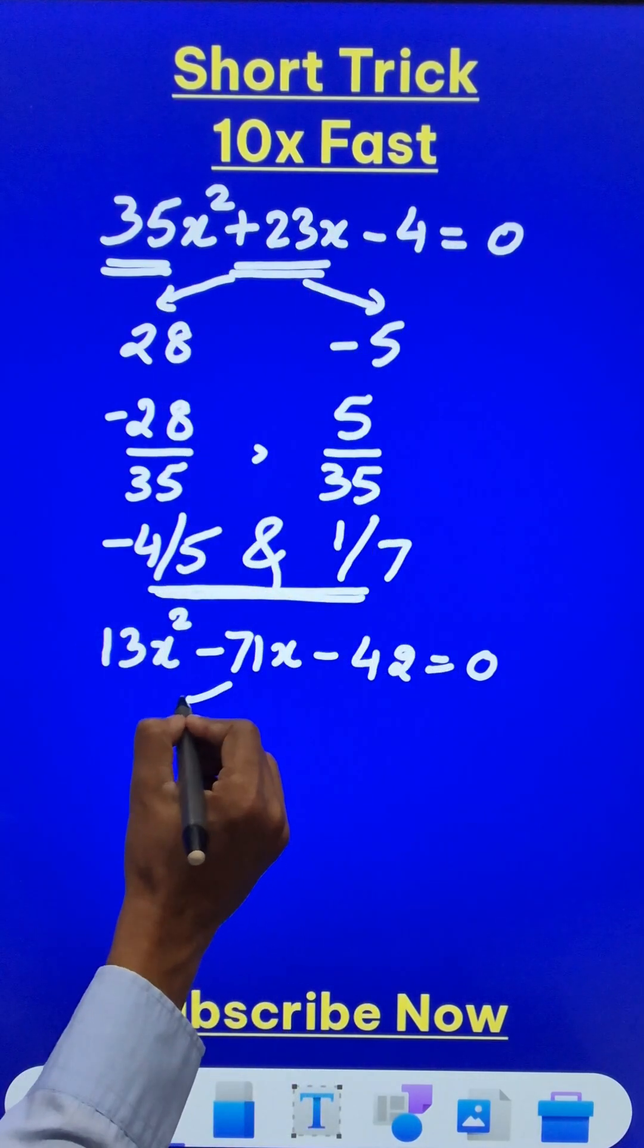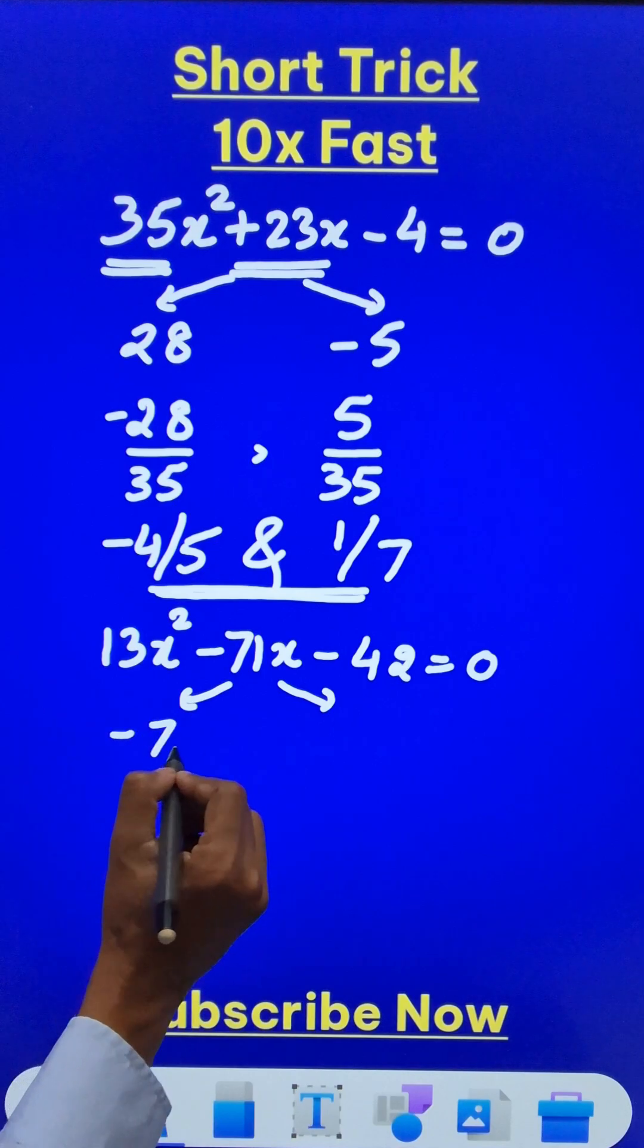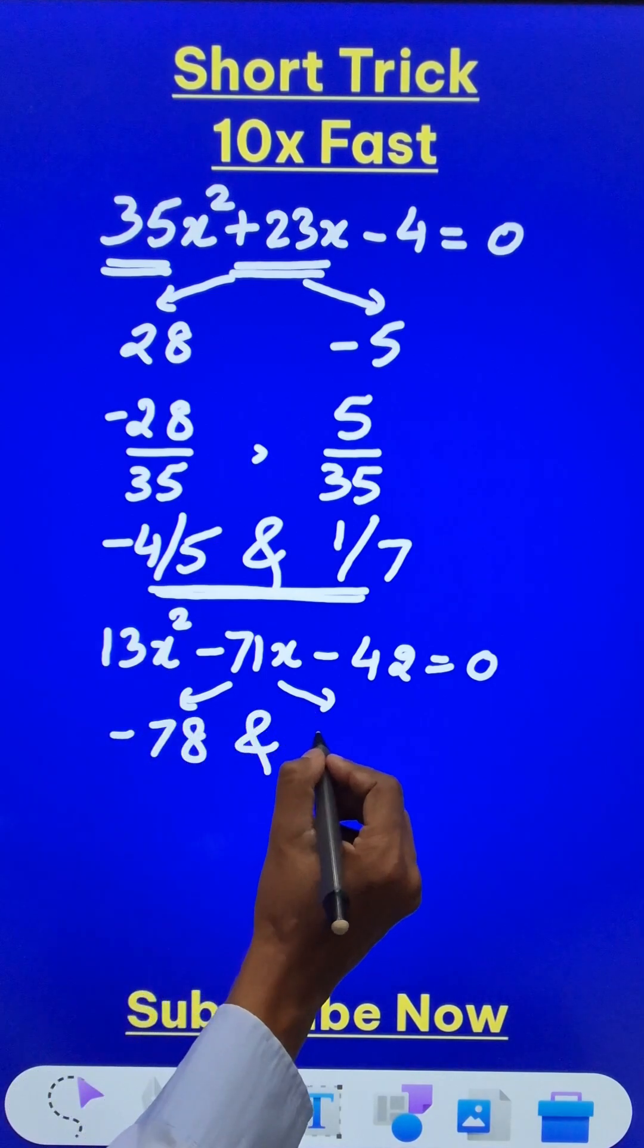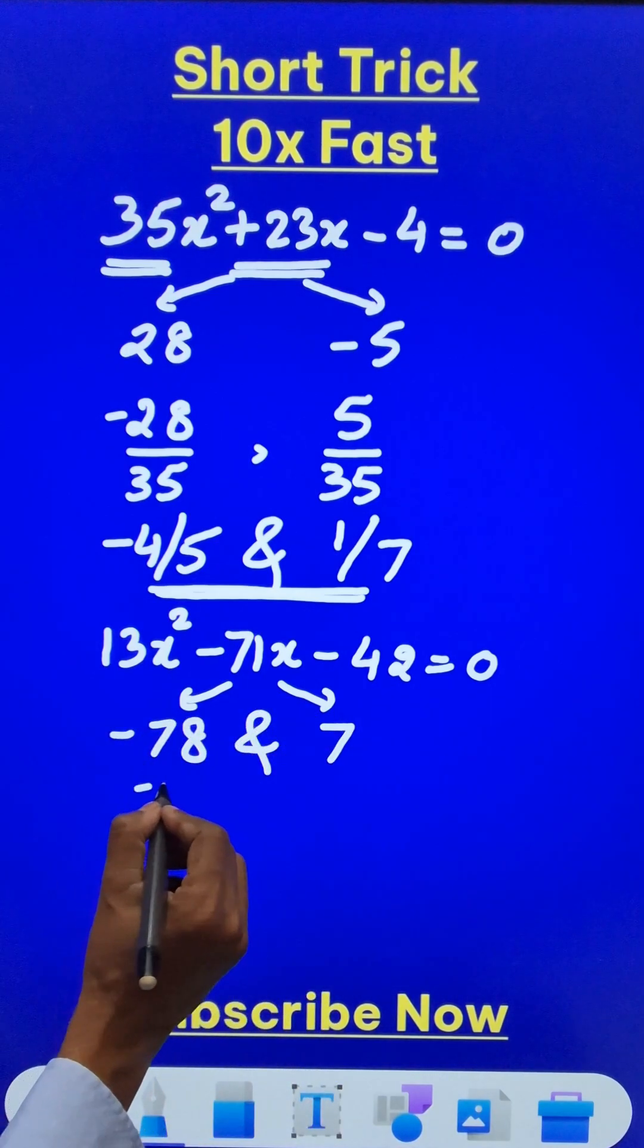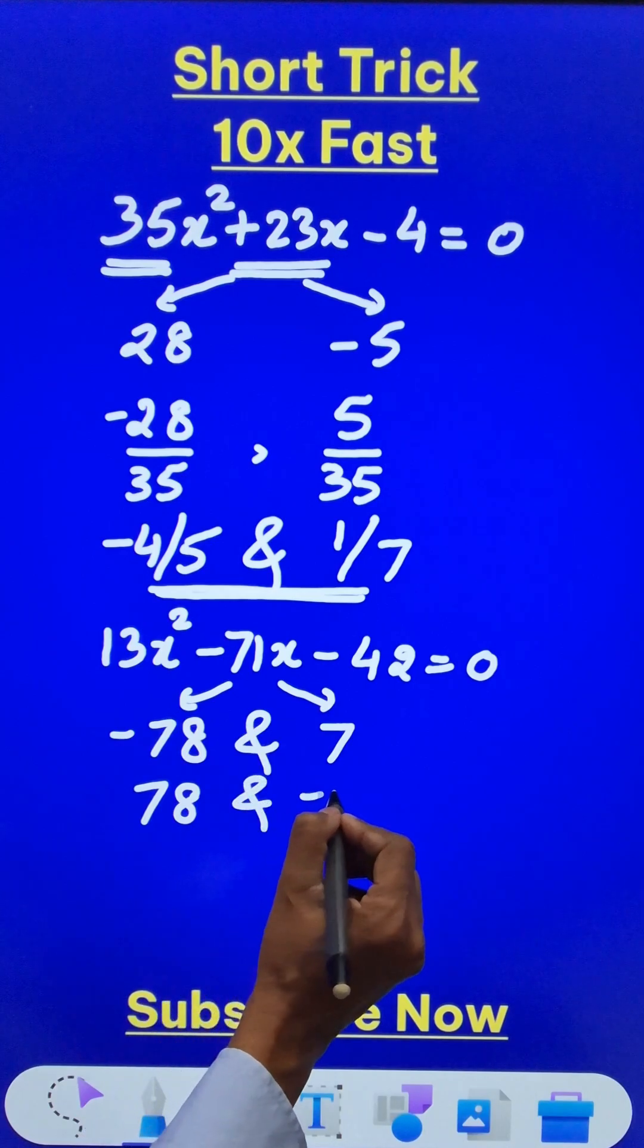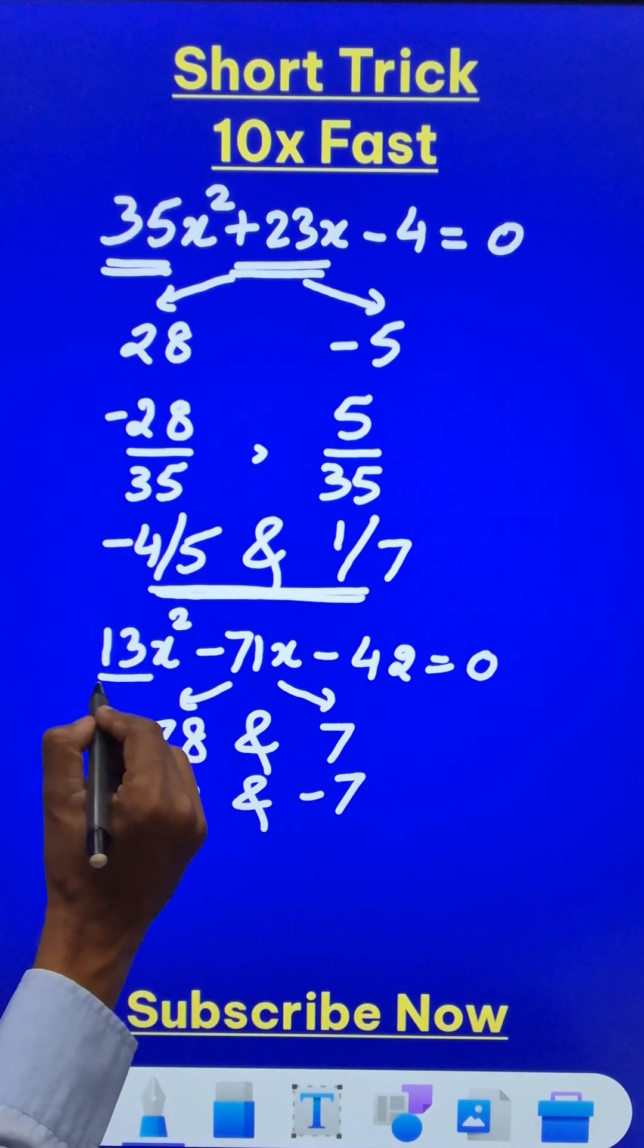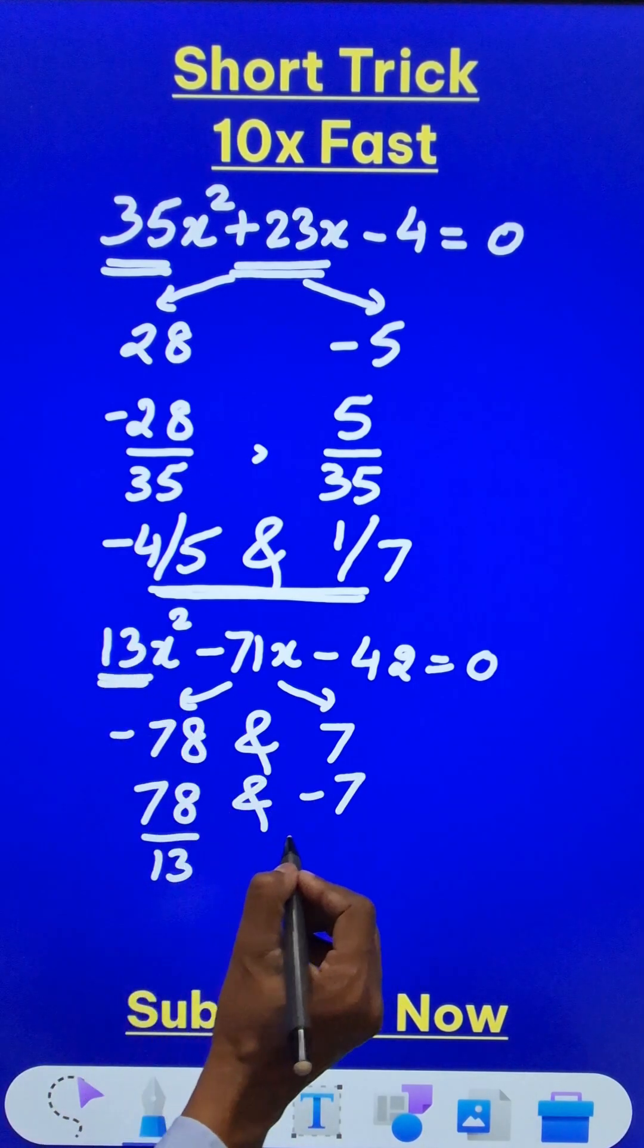Likewise, if you split the middle term here, the factors are negative 78 and plus 7. So change the sign: 78 and minus 7. Finally, the coefficient of x square is 13, so divide by 13 and divide by 13.